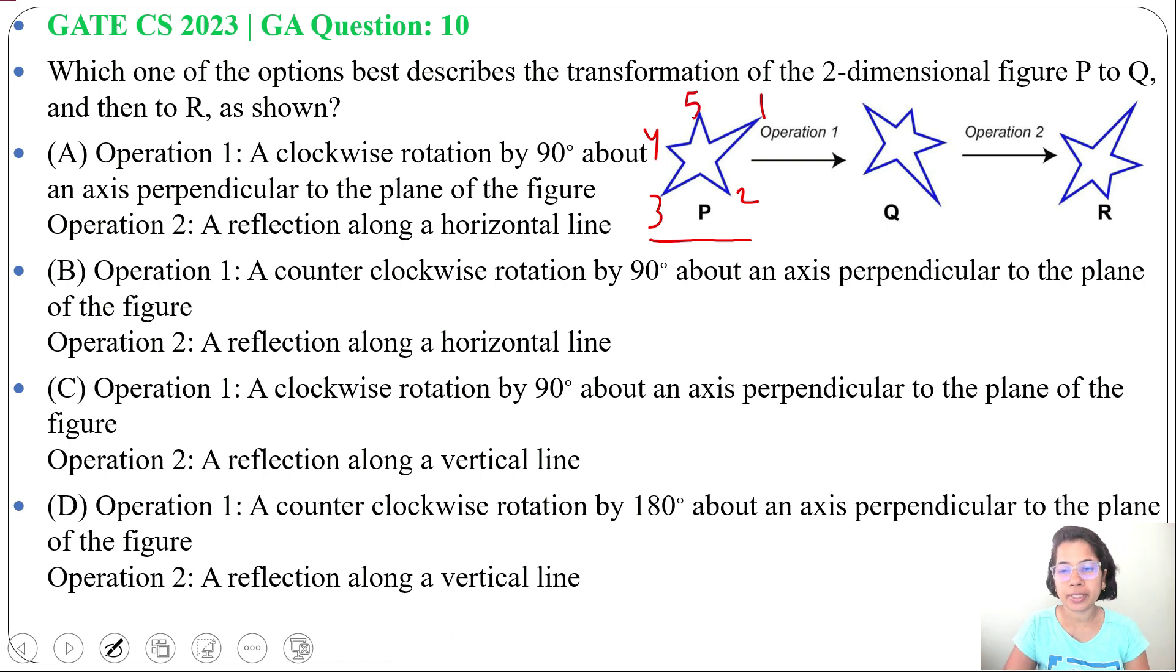Now in operation 1, just mark Q figure. In Q figure, 1 will be this. The biggest angle is 1 and opposite of this is 3, and now this is 4, 5, this will be 2.